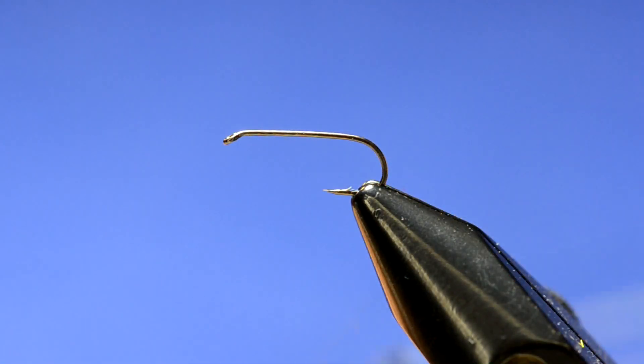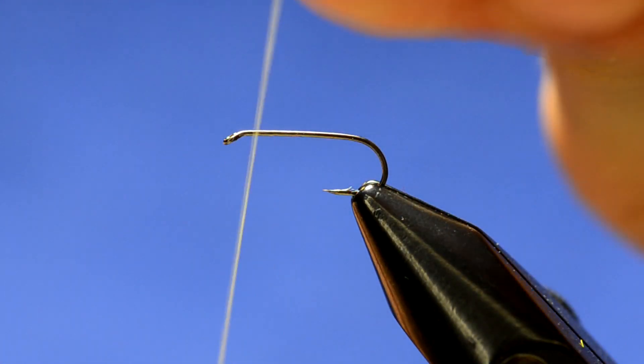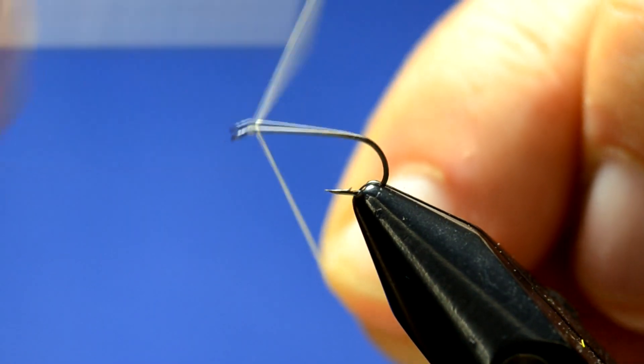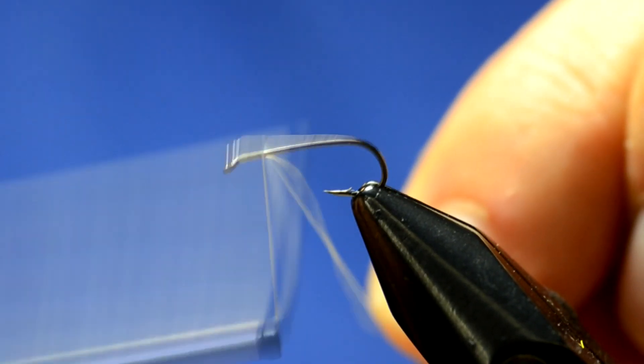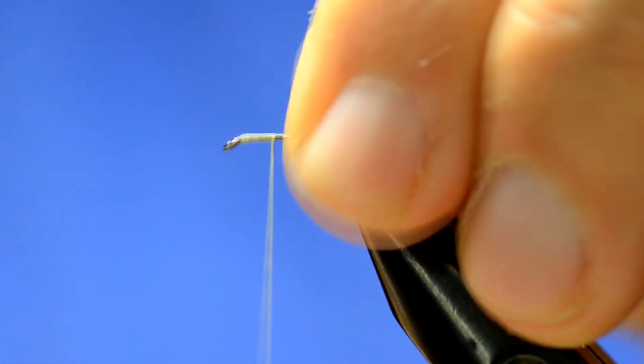Start off using some Montani Fly premium thread 6-0 in yellow. We're going to attach that right behind the eye and go to about the thorax.